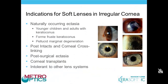Corneal transplants can be tricky to fit due to unpredictable curvature, leading to instability and sometimes harsh bearing on the graft-host junction. An important feature of this lens for irregular corneas is its comfort. For patients already intolerant to rigid lens modalities — whether hybrid, corneal GP, or those not ready for scleral — the Kerasoft IC lens makes an excellent candidate option.